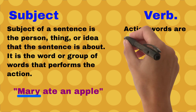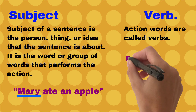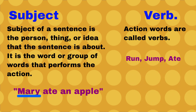Action words are called verbs. For example, run, jump, and ate. For details about verbs, I am attaching a link in the description of a complete playlist of parts of speech, in which you can go through main verbs, its types, and modal verbs.